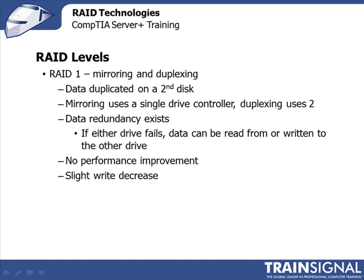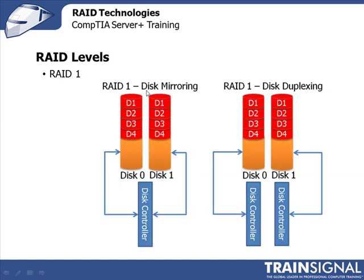But with this level, you won't see any performance improvement, and you'll probably notice a slight write decrease. As we see here with disk mirroring, we have two drives in the array, and the data is duplicated across both drives with a single-drive controller. And with disk duplexing, the data is still duplicated on both drives in the array, but we have two disk controllers, one for each drive.